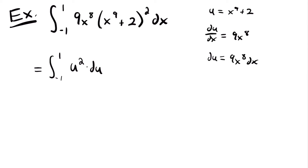Before we move on, it's important to realize that these bounds are not in terms of u — they are still values of x. Originally we were integrating from x equals negative 1 to x equals positive 1. It's helpful to rewrite the bounds as x equals 1 and x equals negative 1, so you don't get confused and plug x-values into an antiderivative defined with u.